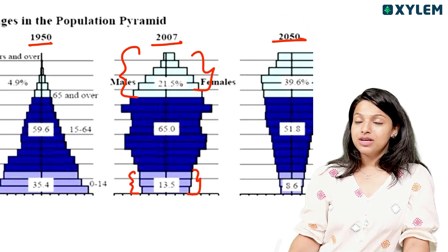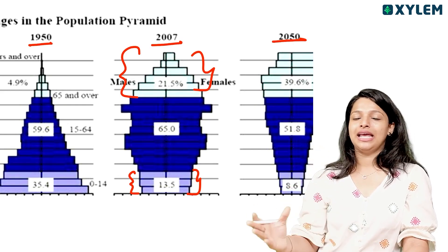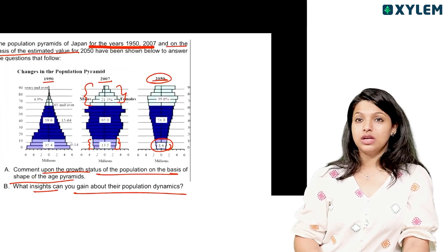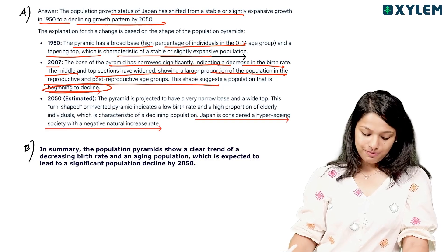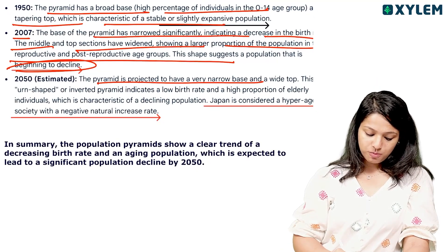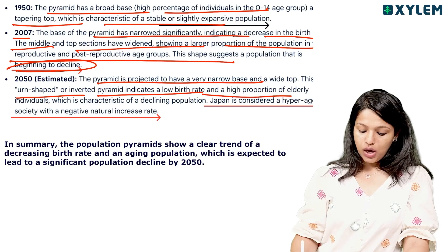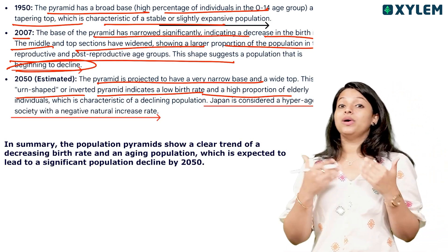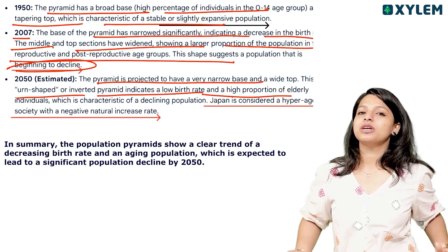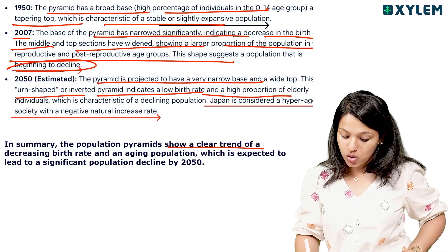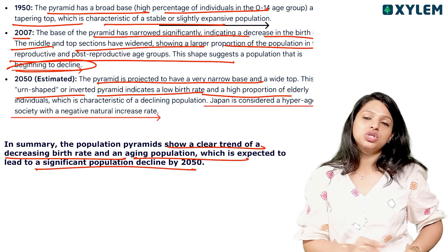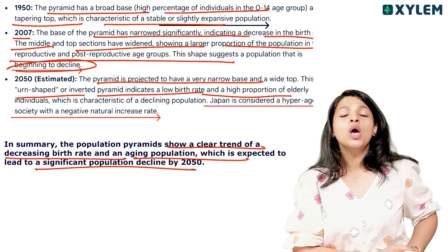That means it is a declining population. The 2050 pyramid is projected to have a very narrow base, an almost inverted pyramid shape, indicating low birth rate and a high proportion of elderly individuals. This is considered a hyper-aging society with negative natural growth. The population is expected to decline. The population pyramids show a clear trend of decreasing birth rate and aging population, which is expected to lead to significant population decline by 2050.